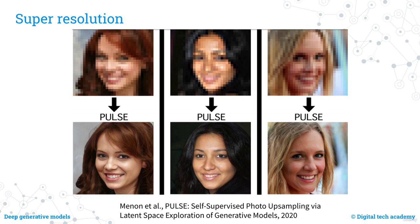Image super-resolution is a technique used to enhance the resolution of an image or video beyond its original resolution. It involves using algorithms to increase the size of the image by filling in missing detail and effectively upscaling it. Super-resolution can be useful for improving image quality for display or printing, increasing detail for scientific or medical analysis, and enhancing resolution for film or television production.